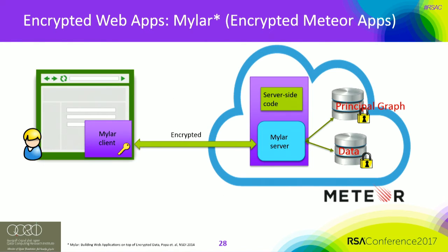The third example is an encrypted web application platform called Mylar, built by MIT researchers on top of the Meteor JavaScript web application framework. You can port any regular Meteor application by annotating which fields to encrypt and what type. It automatically encrypts data on the server. It uses a principal graph to identify which user gets which encryption keys. A browser plugin transparently handles the keys — keys never leave the browser — and the Meteor platform never sees your plaintext data.